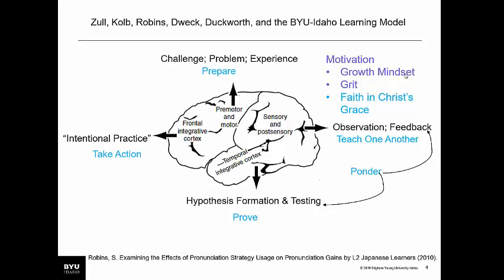Another tenet of the learning model is to teach one another. This comes through feedback we receive from other people, observations they make and share with us, and things we learn from one another. As we ponder our learning — the observations we're making, the feedback we receive — and we ponder ways to put hypotheses into action, we need to prove those things, another tenet of the BYU-Idaho learning model, by testing our hypotheses. And this action needs to be intentional practice.